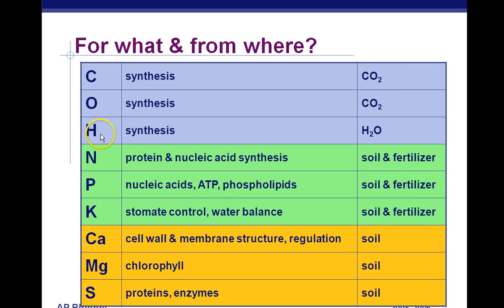The next macronutrients are what's found on a bag of fertilizer: NPK. Nitrogen is needed to make proteins and nucleic acids. Nucleic acids have a nitrogen base — for DNA that's adenine, guanine, cytosine, and thymine. For proteins, amino acids make up the structure, with an NCC backbone. Without enough nitrogen in the soil, the plant can't make proteins like enzymes or synthesize new DNA for new cells. Nitrogen, phosphorus, and potassium come from soil and fertilizer, not from the air.